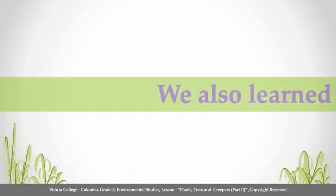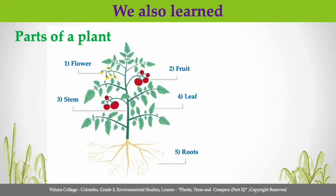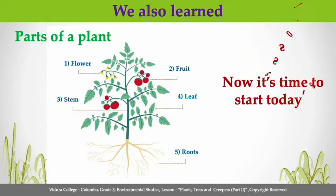Okay children, if you can remember, we also learned about parts of a plant. These are the parts of a plant: flower, fruit, stem, leaf, and roots. Okay children, now it's time to start today's lesson.